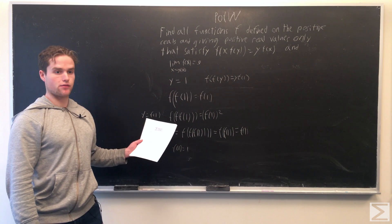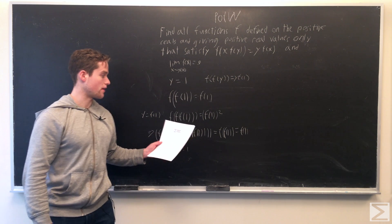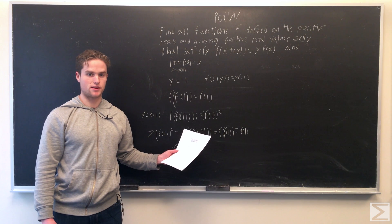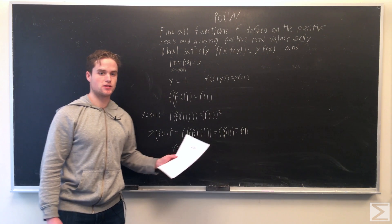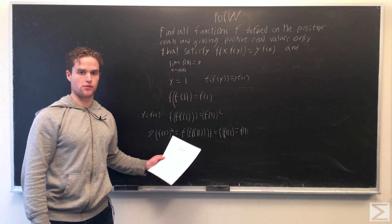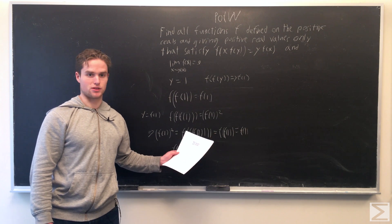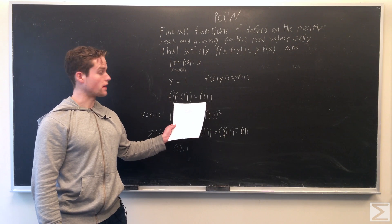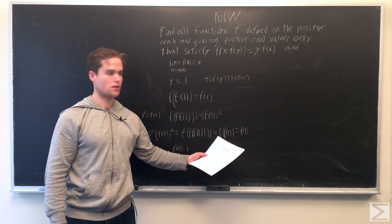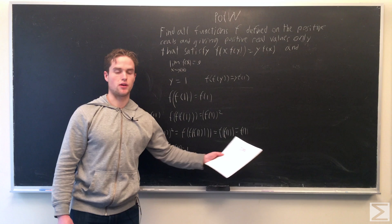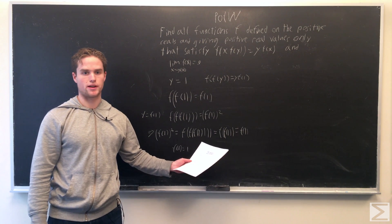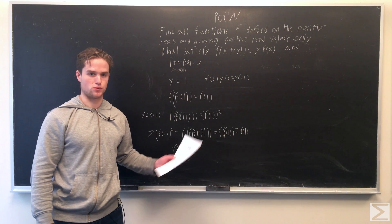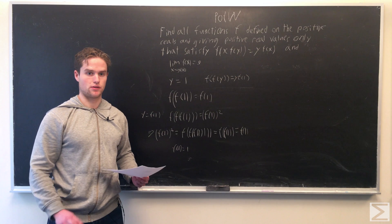If we plug in y = f(1), we have f(f(f(1))) = f(1)². Using these two equations, we can say f(1)² = f(f(1)) = f(1). Since f(1) has to be positive, f(1) = 1. So that establishes our first fixed point.